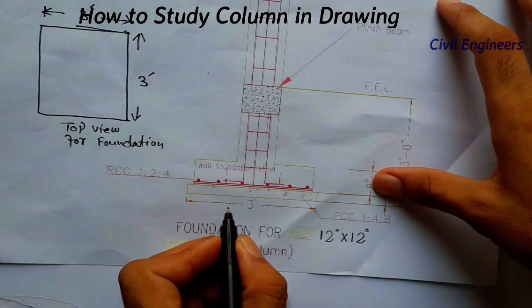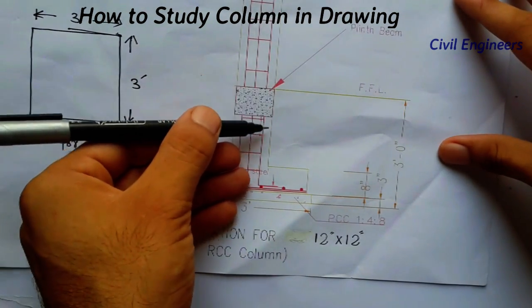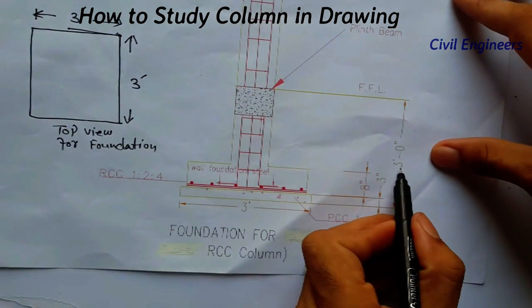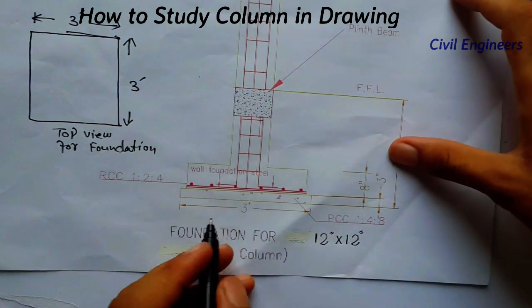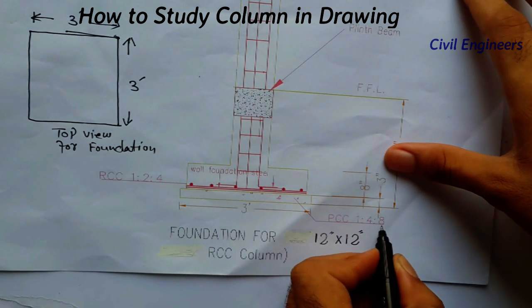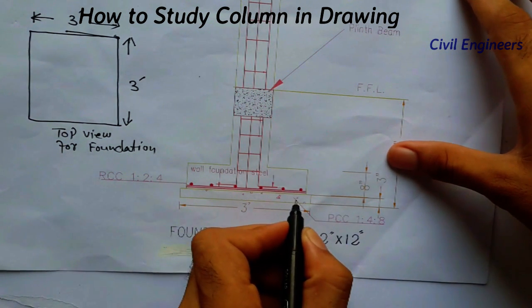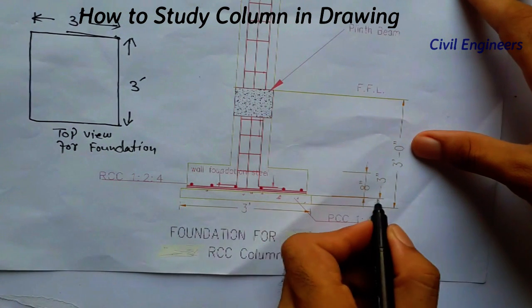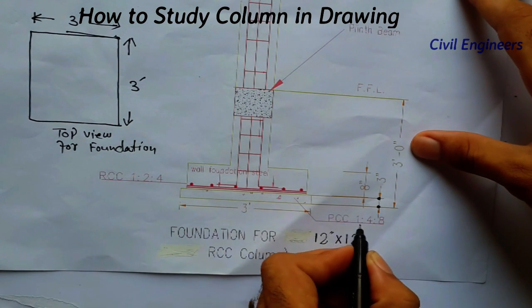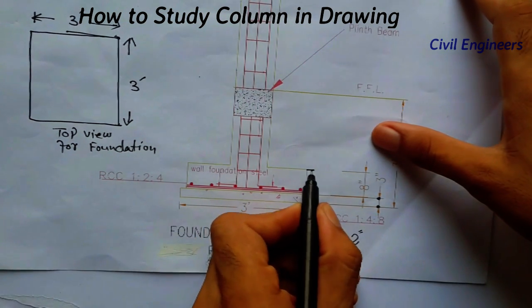The breadth or width of the foundation is 3 feet, and the depth or height of the foundation is also 3 feet. Now here is PCC 1:4:8 — that is Plain Cement Concrete in this section. The thickness of the PCC layer is 3 inches.